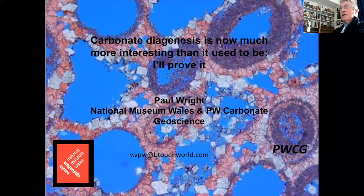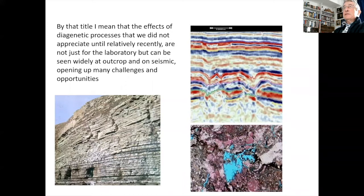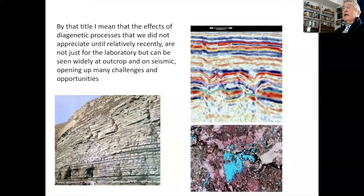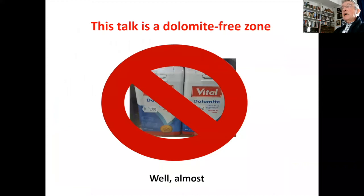Thank you for the invitation to give this talk. It's a rather provocative title in some ways, and as many people watching know, I'm not a geochemist, so I'm going to be tackling this from a field-oriented point of view. By that title, I mean the effects of diagenetic processes, many of which we have only become to fully appreciate recently, not just for the laboratory side of the science, but for things that can be seen widely at outcrop or on seismic. Features that we can see — diagenesis that we can readily see. Some of it will be at the petrographic level, but these are field-scale or seismic-scale diagenetic features, and the ability to understand and recognize these has increased very recently, providing us with many challenges and opportunities.